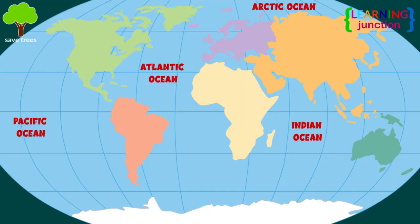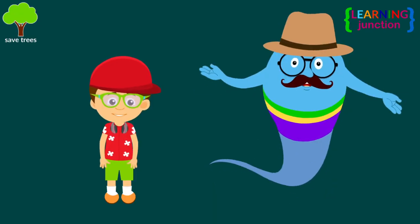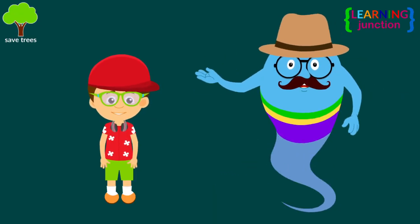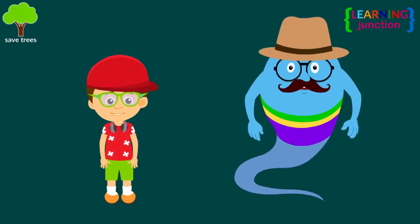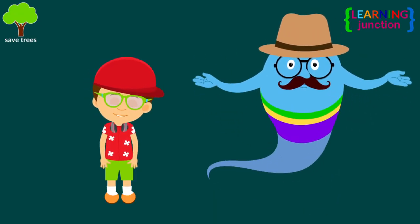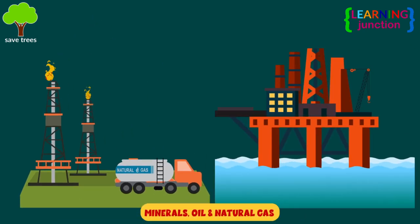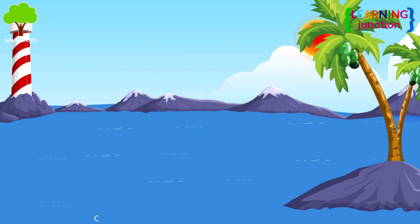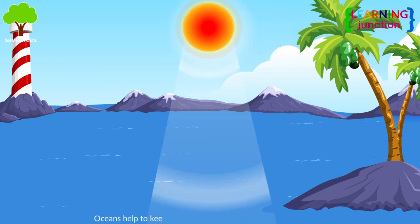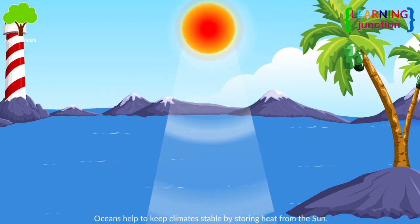The world's oceans are very important to life on earth. They are a great source of food for people all around the world. They also provide minerals, oil, and natural gas. Oceans help to keep the climate stable by storing heat from the sun.